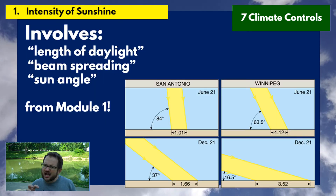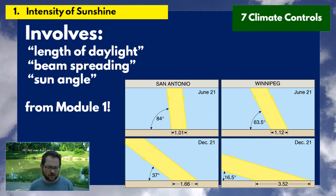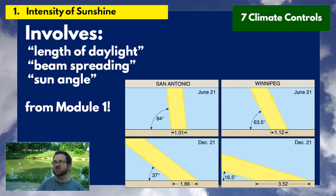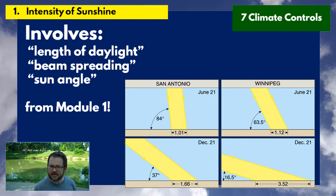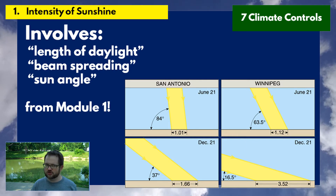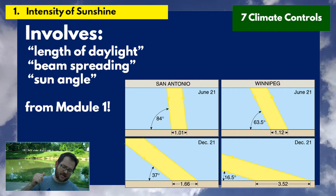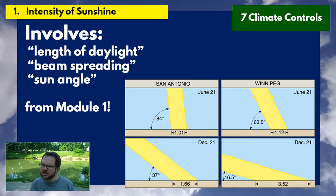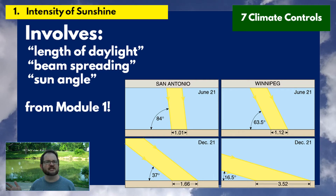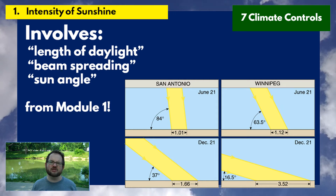Let's start with the intensity of sunshine. This is a review of material from the first module of the course, where we talked about factors determining how much radiation a region receives from the Sun. This includes things like the length of daylight — the longer the Sun is up, the more solar radiation you're receiving — and also beam spreading and Sun angle, meaning how high in the sky the Sun is.